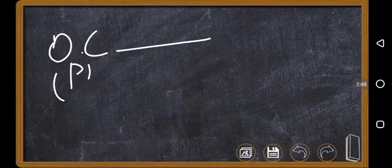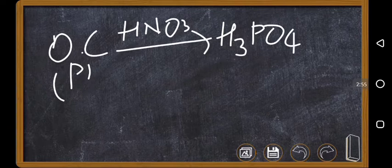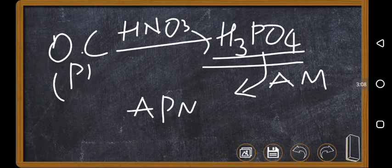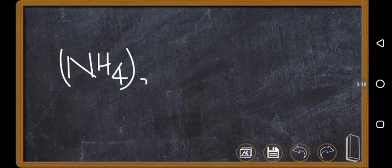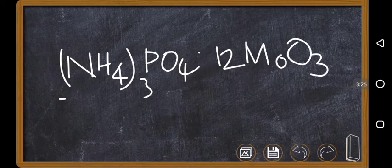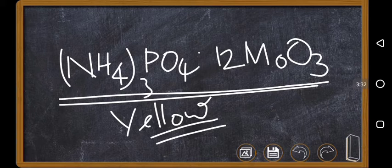In the second Carius method, the organic compound containing phosphorus is again treated with HNO₃ so that all the phosphorus is converted to H₃PO₄. This H₃PO₄ is then treated with ammonium molybdate to give ammonium phosphomolybate, with formula (NH₄)₃PO₄·12MoO₃. This is a yellow colored precipitate, and its formation confirms the presence of phosphorus — the same test used in qualitative detection of phosphorus.